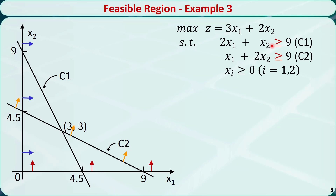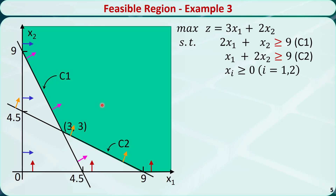In this example, the first constraint is also changed to a greater than or equal to sign, so the feasible region of the first constraint c1 is above this line. And the feasible region of the linear programming problem is changed to this shaded area.